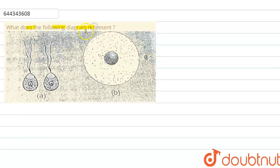The question asks what the following diagram represents. In this question there are two diagrams, A and B, and we need to discuss both diagrams. We are starting with the first, diagram A.